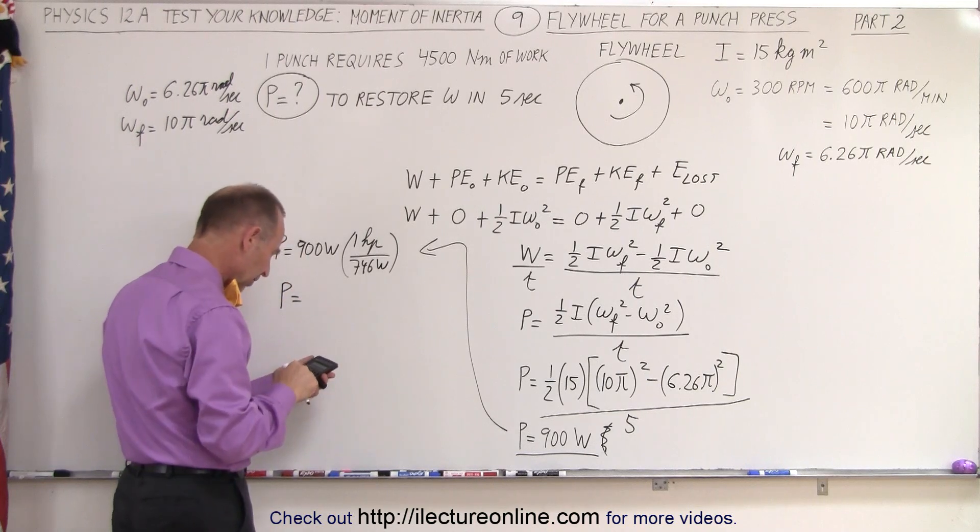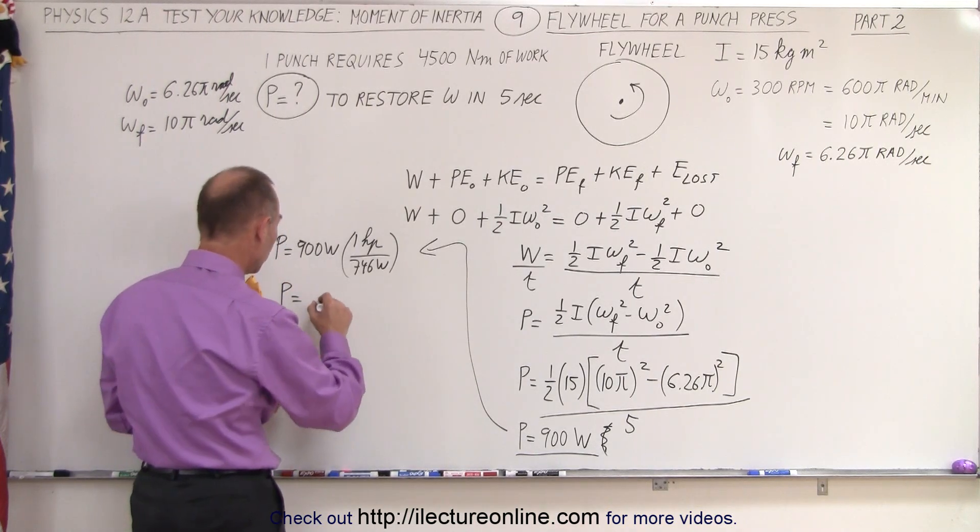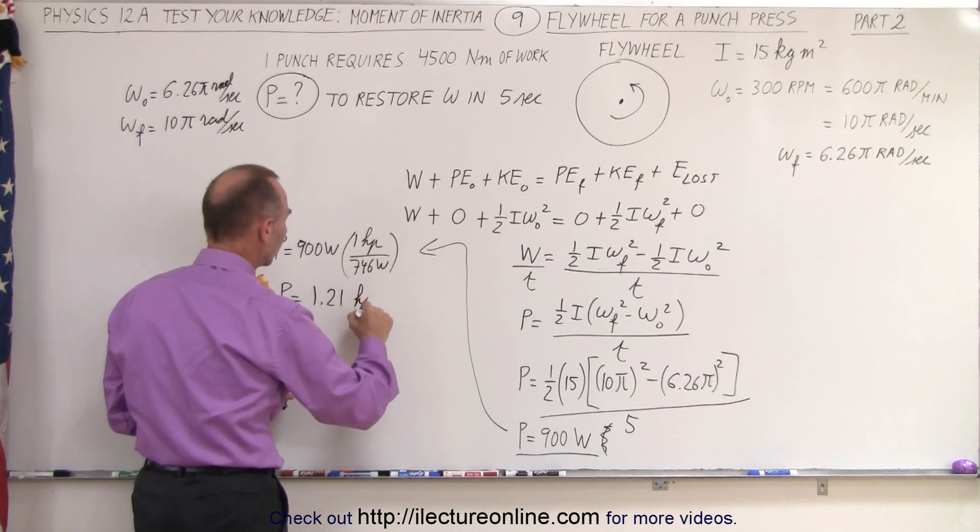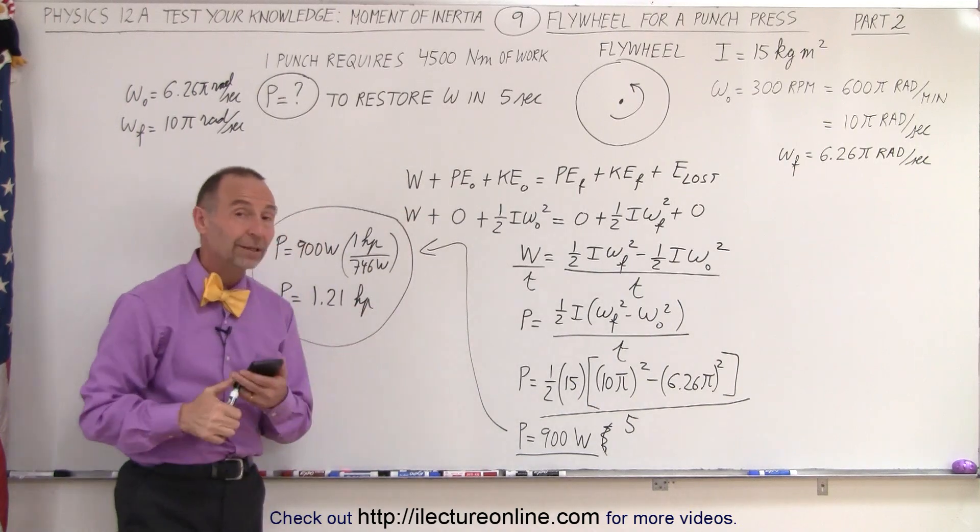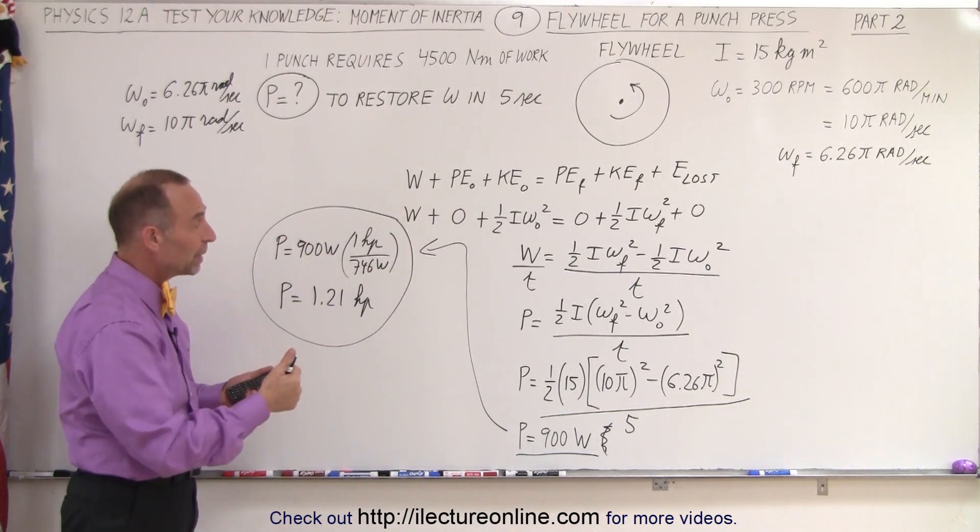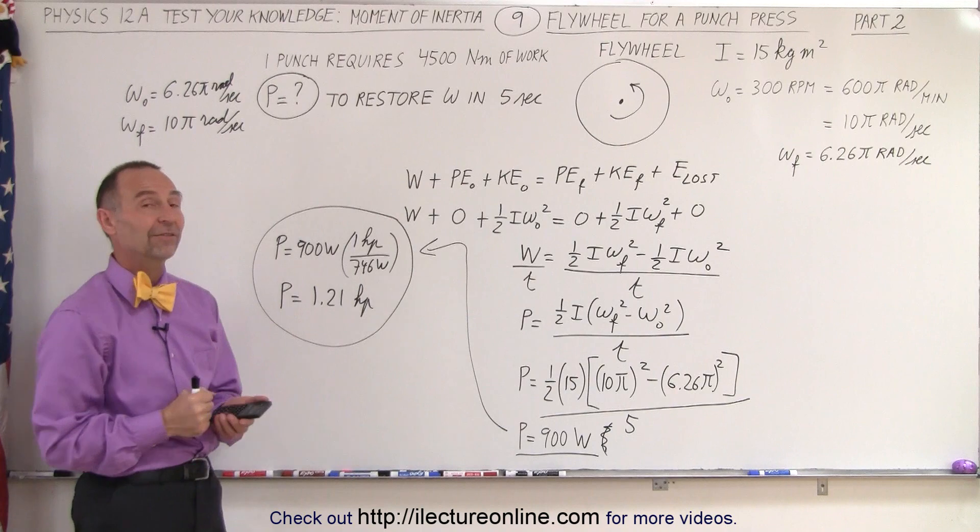P equals, divided by 746, that gives me 1.21 horsepower. That's the power required in the motor to bring the flywheel back up to speed, so we can do a punch like that every 5 seconds, and that is how it's done.